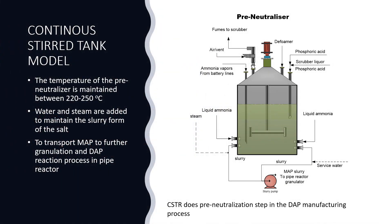To produce MAP in large-scale, industries use CSTR model reactor to perform the chemical reaction. They call it as pre-neutralizer in DAP production units.